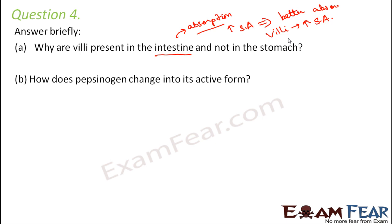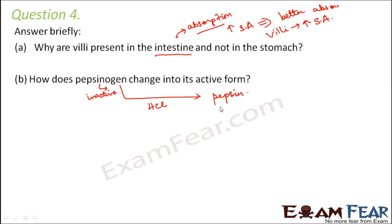How does pepsinogen change into its active form? Pepsinogen is released by gastric glands in the stomach as an inactive form. It is made active by the action of hydrochloric acid. When pepsinogen is acted upon by HCl, the medium becomes acidic and pepsinogen gets converted into pepsin, the active form. Pepsin helps in digestion of proteins by converting complex protein structures into proteases or peptones.